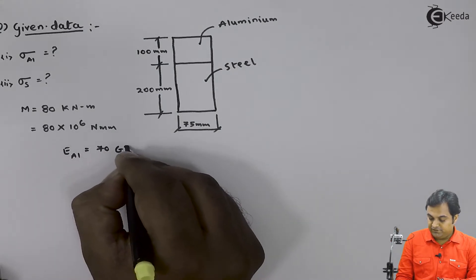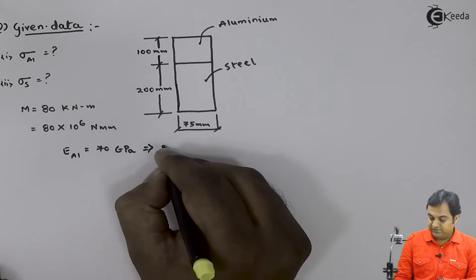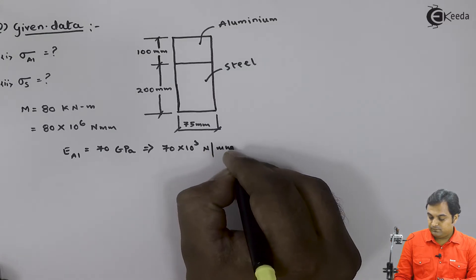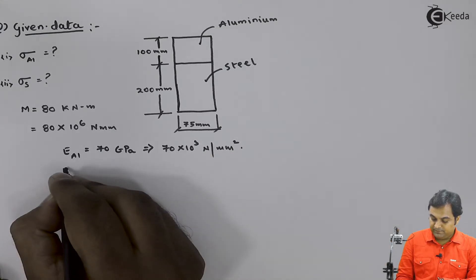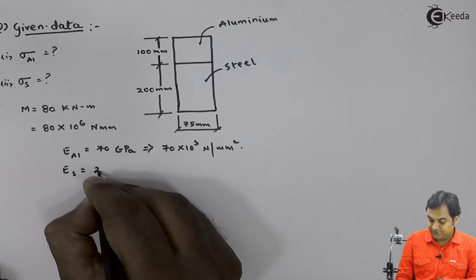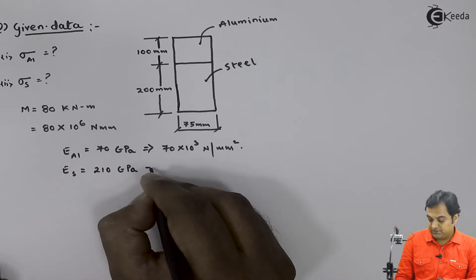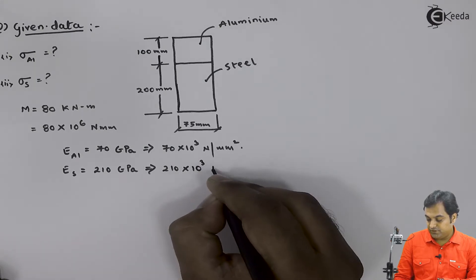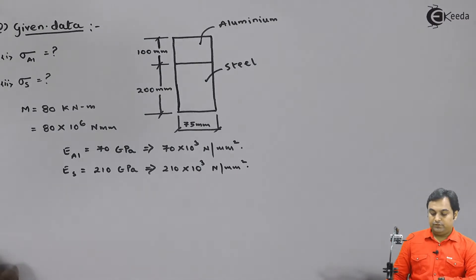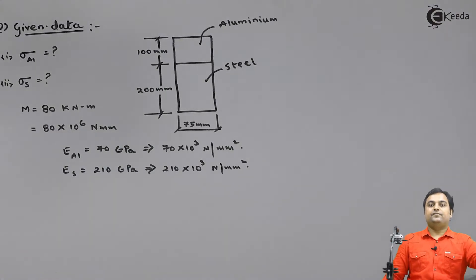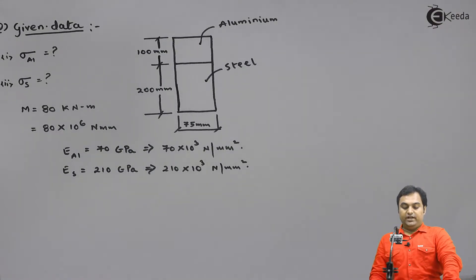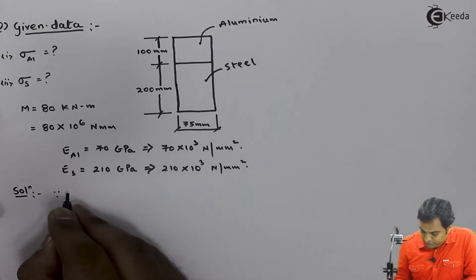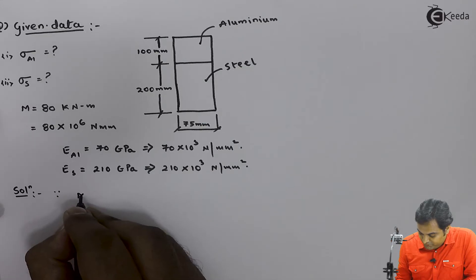For aluminium, E_al = 70 GPa = 70 × 10³ N/mm². For steel, E_steel = 210 GPa = 210 × 10³ N/mm². That is all the given data. Now for the solution: since the modular ratio is given by m = greater modulus of elasticity divided by the lesser.